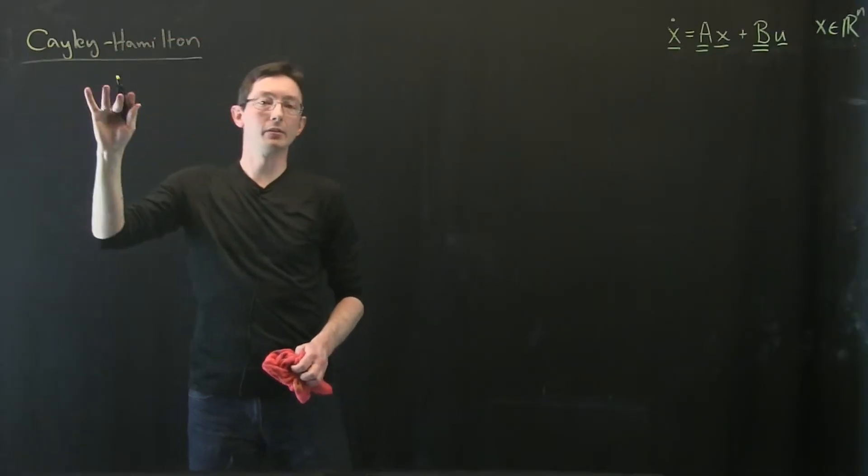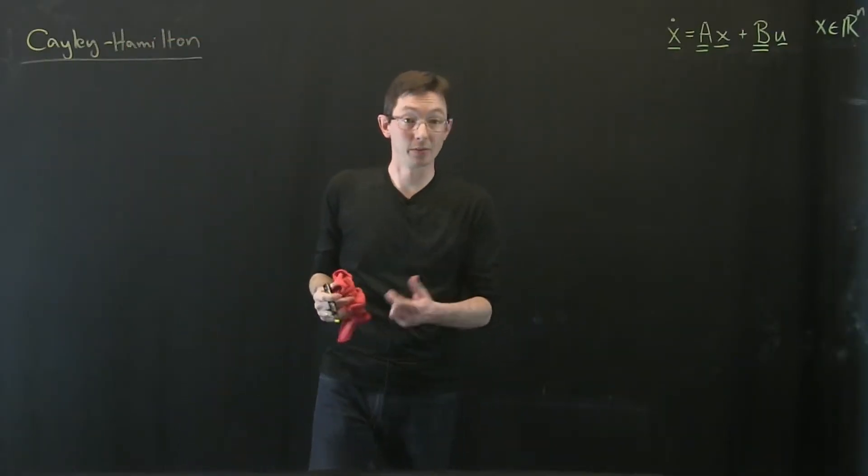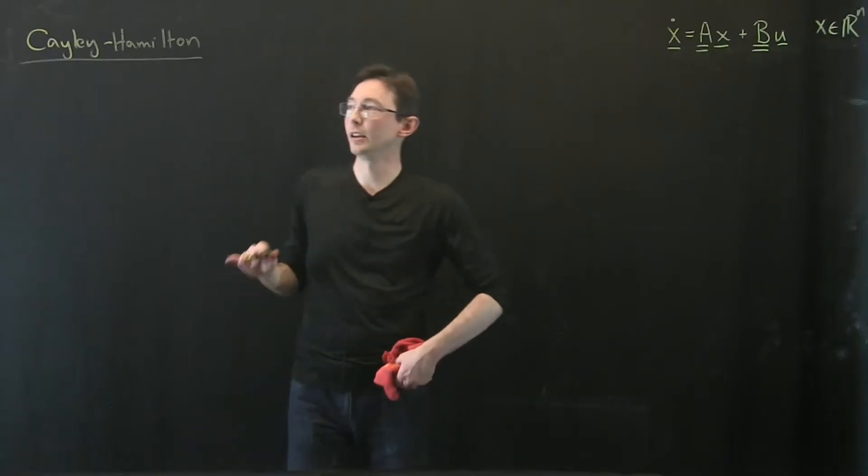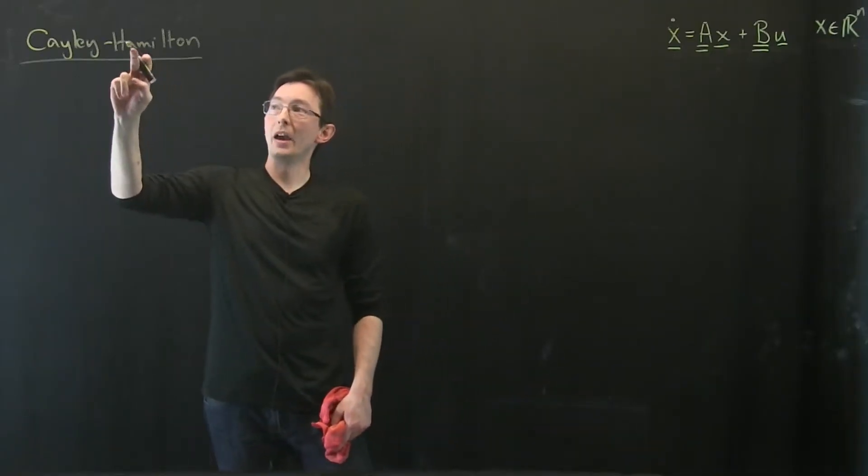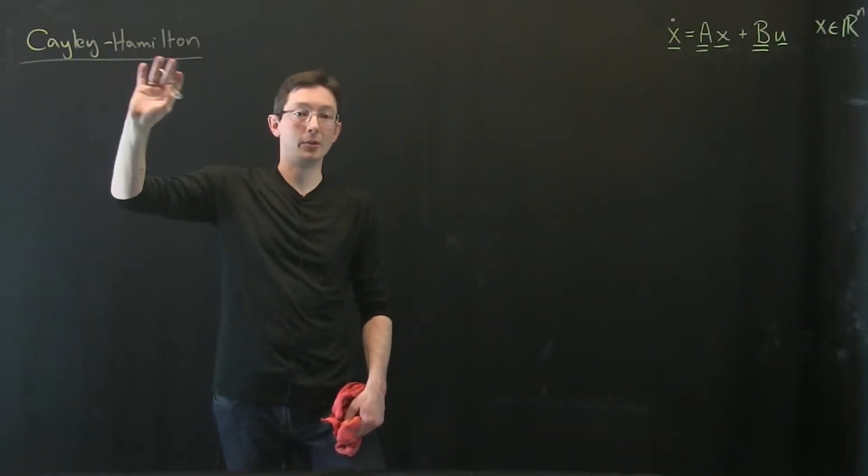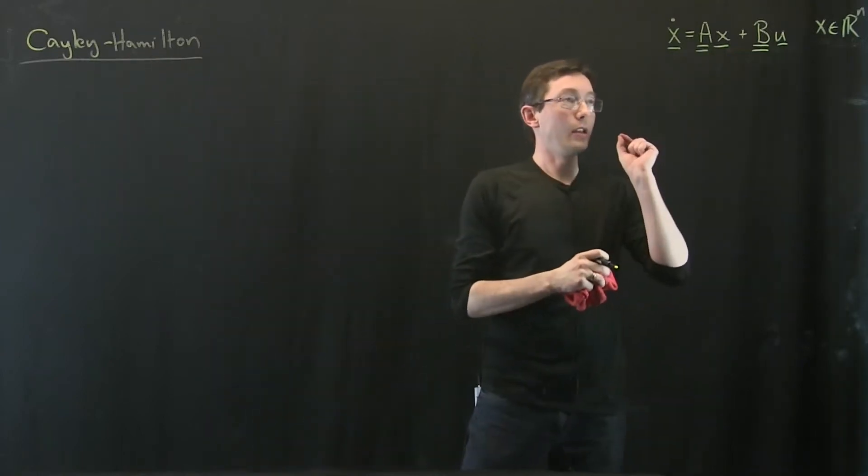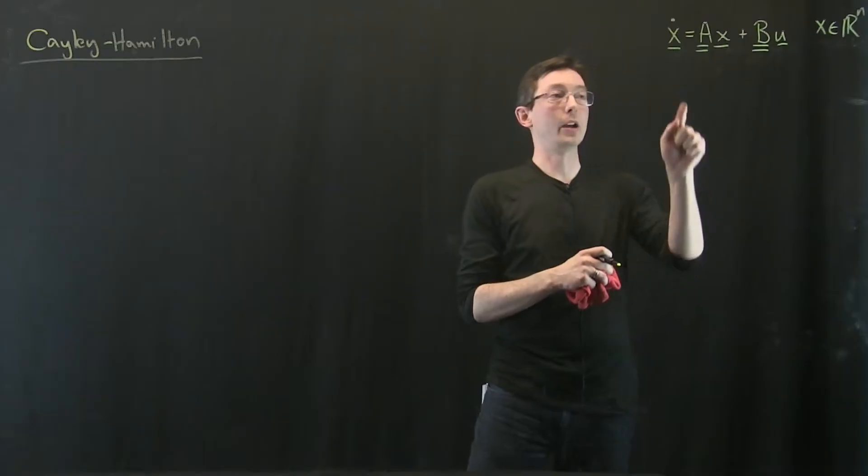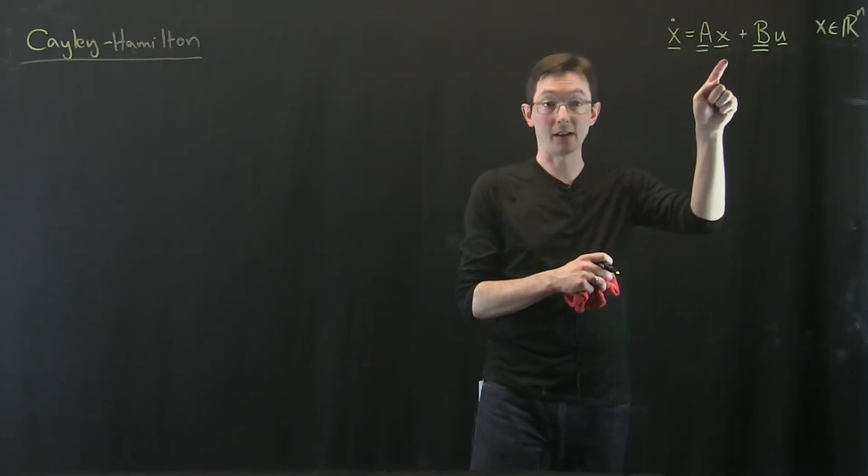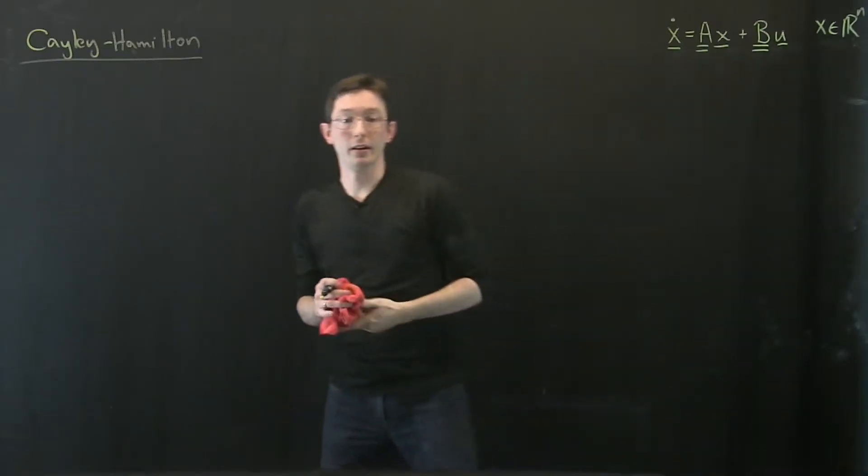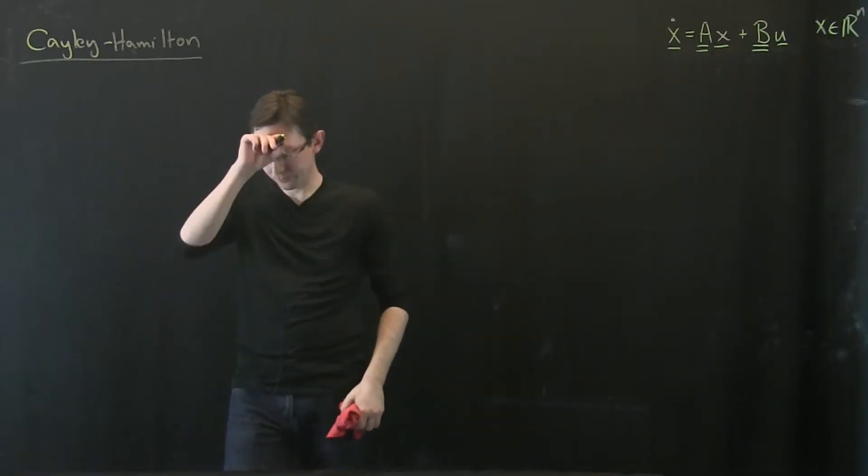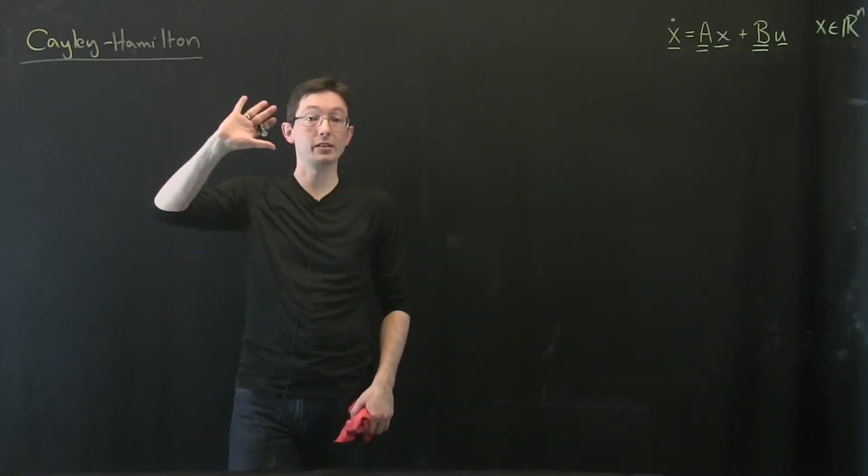This is an absolute gem in linear algebra. It's not that commonly known. Again, if you see Hamilton's name, you know this is going to be a big deal. The Cayley-Hamilton theorem is an extremely elegant way of representing solutions of x dot equals ax, and I'm going to tell you about this now. So the Cayley-Hamilton theorem is extremely simple to state.